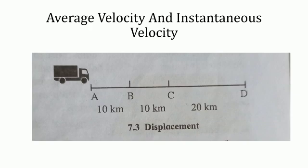We see that the velocity of the truck is different in different segments AB, BC, and CD. However, the average velocity for the entire route AD is 40 kilometers per hour. Instantaneous velocity is the velocity of an object at that instant or at that point of time. The instantaneous velocity can be different at different times.